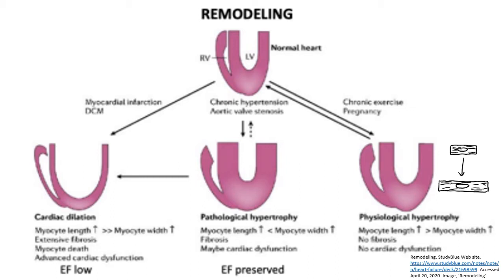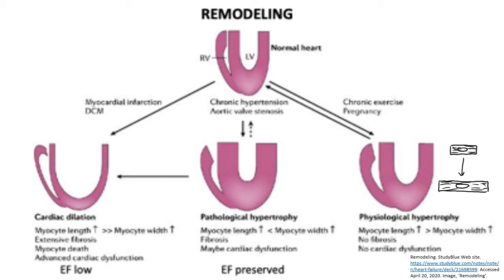Essentially it's a normal heart just with a greater pumping capacity. As denoted by these arrows, physiological hypertrophy can occur but if a particular stimulus is stopped then the heart can return back to normal. In the case of pregnancy, after the woman has given birth the heart will return from being hypertrophied back to normal. Similarly, if you're training for a marathon, complete it, and then stop exercising, your heart will return to being a normal size after that chronic exercise.